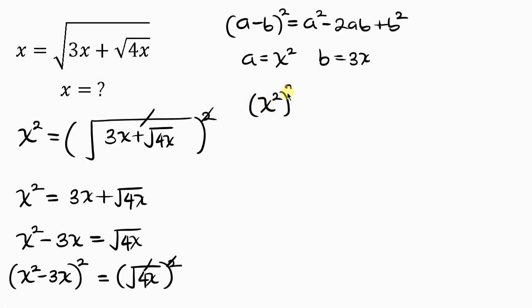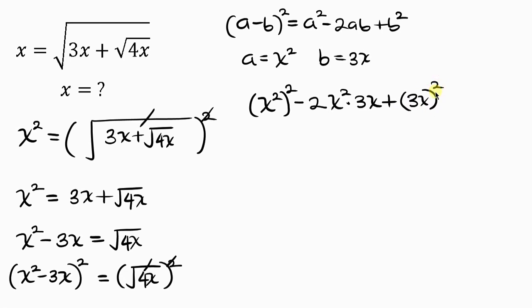And b is in the form of 3x. So expanding: a squared is x squared raised to the power of 2; minus 2ab is minus 2 times x squared times 3x; plus b squared is plus (3x) squared. This equals the right hand side which is 4x.